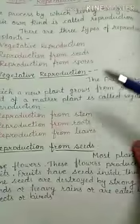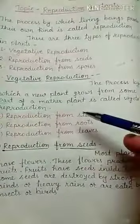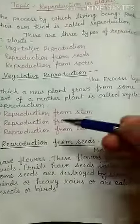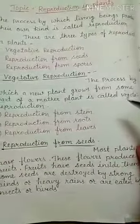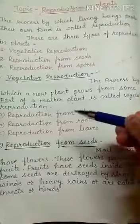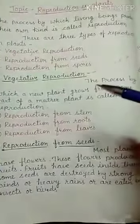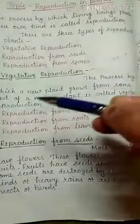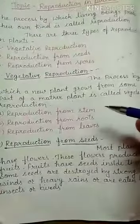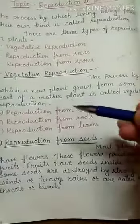Vegetative reproduction: the process by which a new plant grows from some part of a mother plant is called vegetative reproduction.